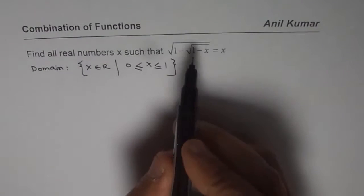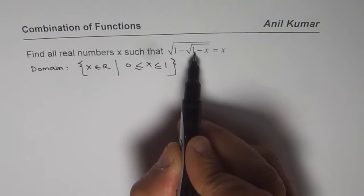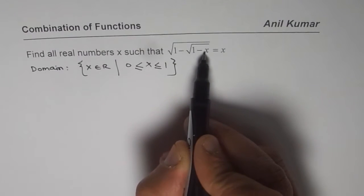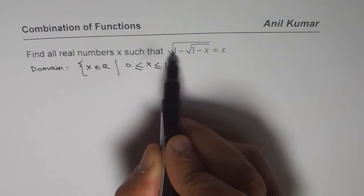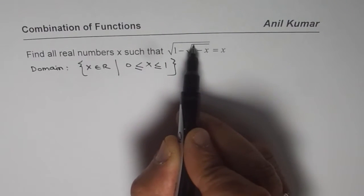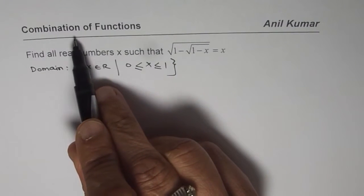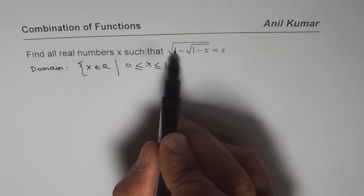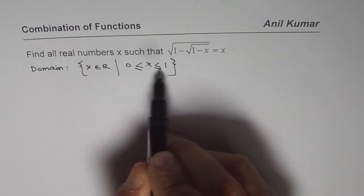You could find the domain by first working on the inner radical: 1 minus x should be non-negative, which means x is less than or equal to 1. And then for the outer square root, 1 minus that inner function should also be non-negative — meaning its maximum value could be 1. That is why the combination of functions comes into picture, and that gives you this domain.